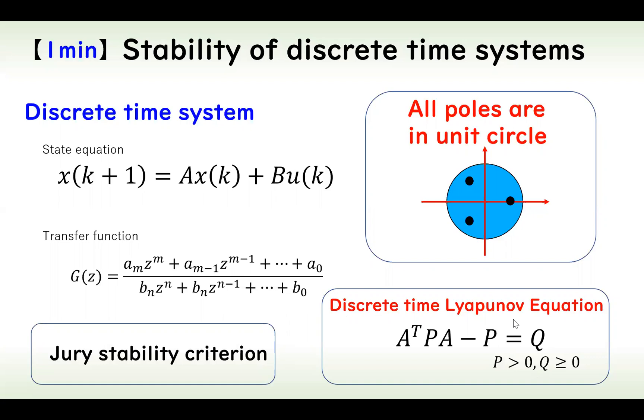The Lyapunov equation for discrete time systems is given like this. When the discrete Lyapunov equation can be satisfied, the system is asymptotically stable.